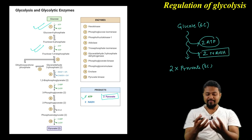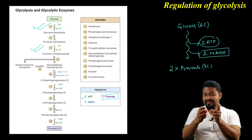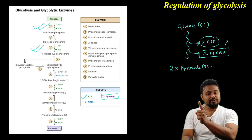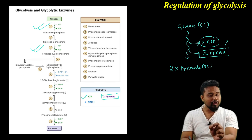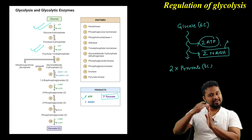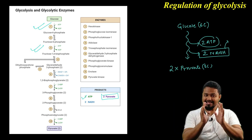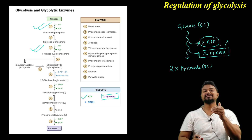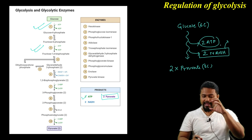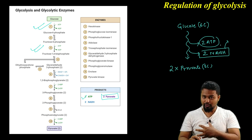So the net gain of ATP is 2, plus we get 2 NADH, which is our reducing power. This NADH carries a lot of energy hidden within it. This energy cannot be directly obtained as ATP — it has to be used in the electron transport chain. And where is the electron transport chain? It is located in the mitochondrial inner membrane. There we will discuss in detail about the Krebs cycle.